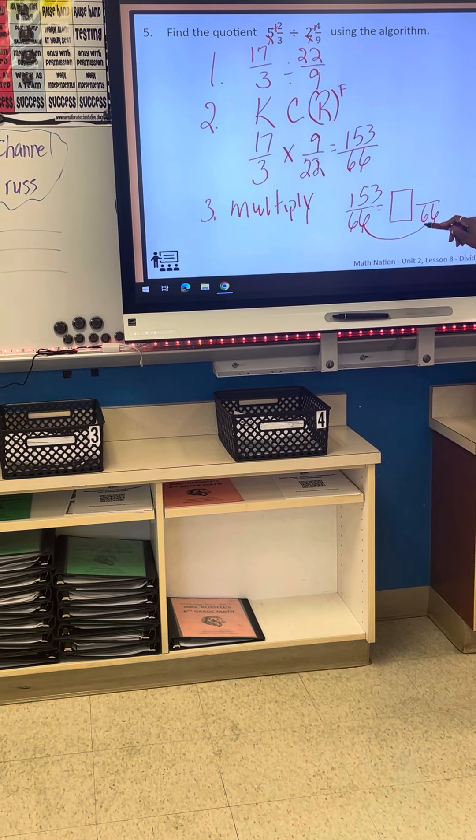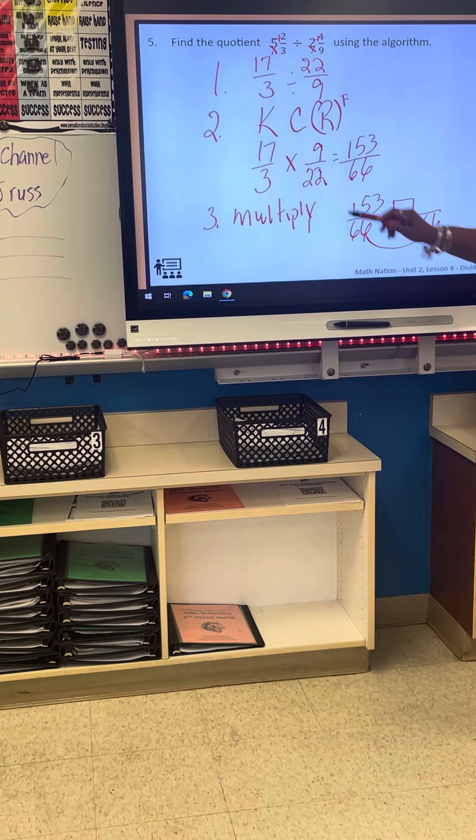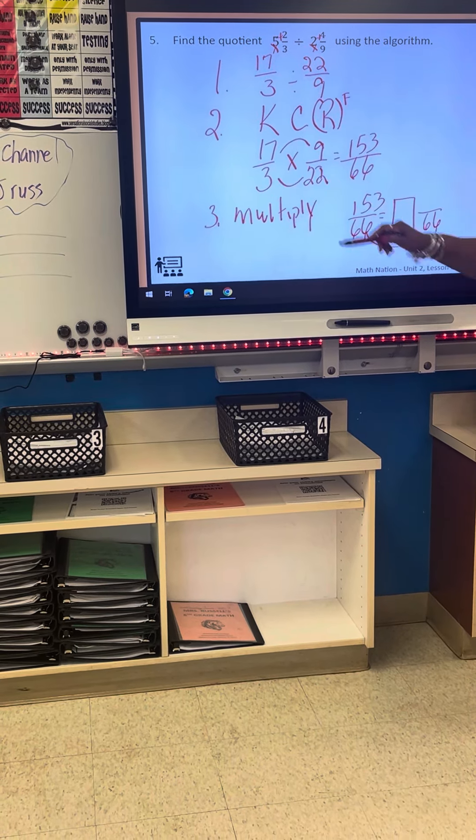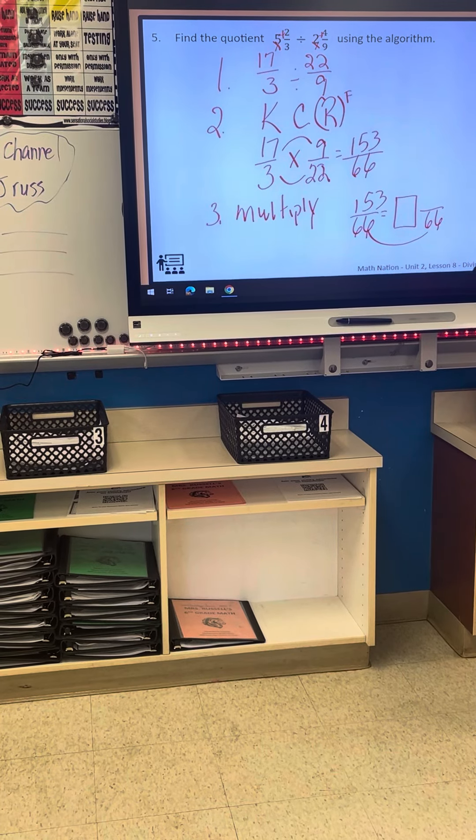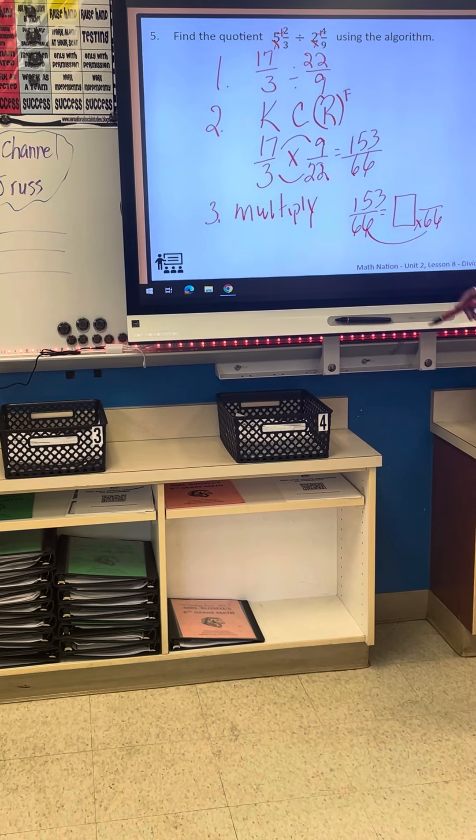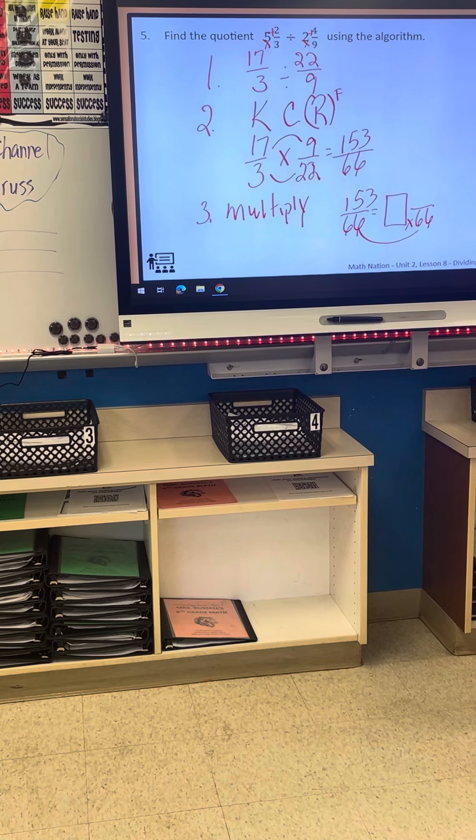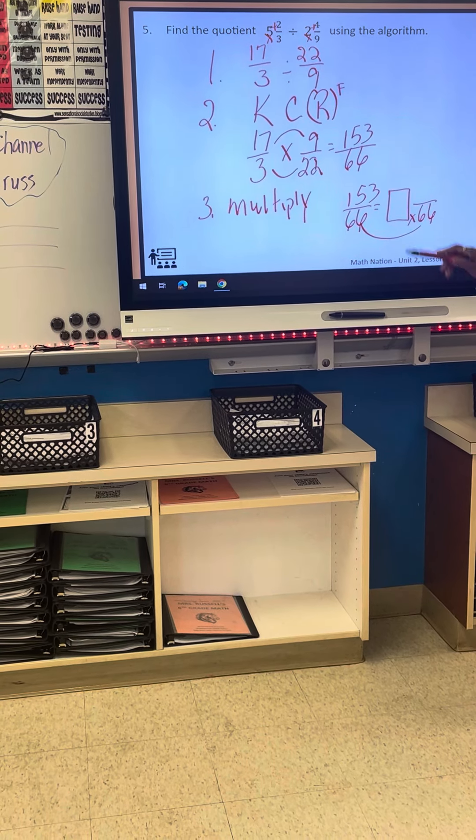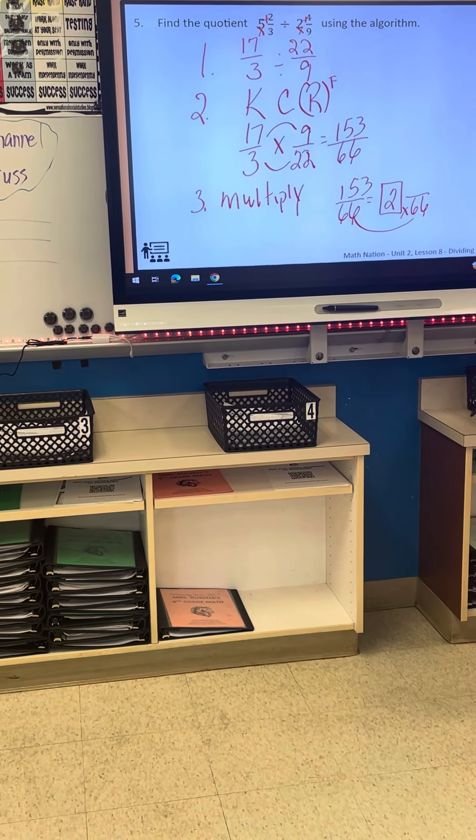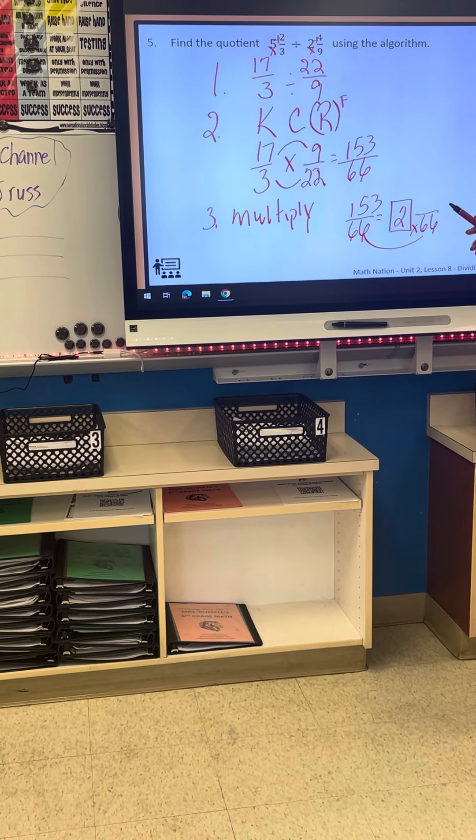We're going to bring this. And I forgot to do this - make sure y'all connect them. And we're going to bring our denominator over. Now, it's a division problem. Y'all divide it. What do we got? Two. Then what are we going to do? Multiply two times sixty-six.